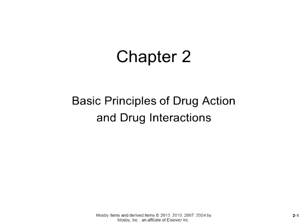We have three types of interactions in the body with the drug. One is called an agonist — when the drug interacts with the receptor to stimulate a response. Then you have antagonists, where the drug attaches to the receptor but does not stimulate a response. And the partial agonist interacts with the receptor to stimulate a response but will also inhibit other responses.